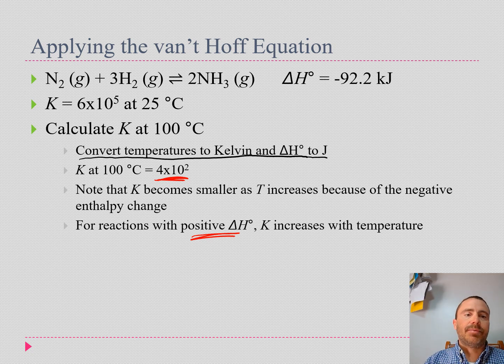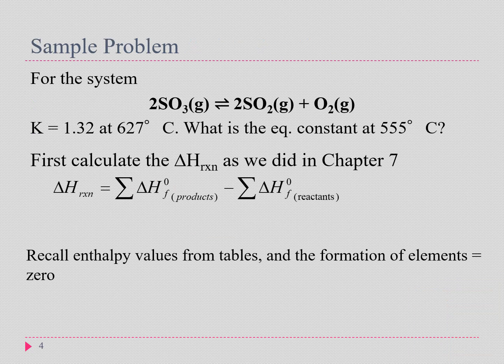Let's work a sample problem using the van't Hoff equation to finish off our chapter. Here's our sample problem. We're going to start with our equilibrium expression: two sulfur trioxides in equilibrium with two sulfur dioxides and an oxygen. We know the K at 627 degrees Celsius. What is K at 555? First off, we're going to calculate our enthalpy change of reaction just like we did back in Chapter 7, where we do products minus reactants.